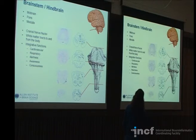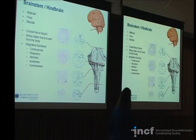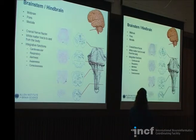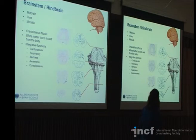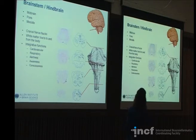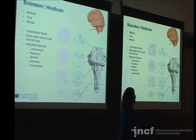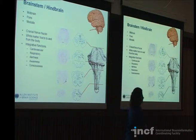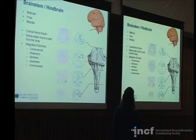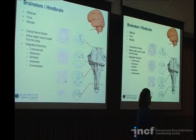There are different levels in the hindbrain: midbrain, pons, and medulla. It's where the cranial nerve nuclei are located. There are 12 cranial nerves, and with the exception of the first two — olfactory and optic — they all terminate back here in the hindbrain, starting with the oculomotor all the way down to nerve 12. They do integrative functions and are involved in cardiovascular control, respiratory control, alertness, awareness, and consciousness. Damage to this area is very bad for you. It's comprised of white matter tracks and individual nuclei.